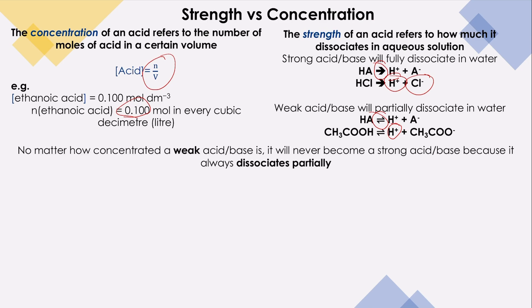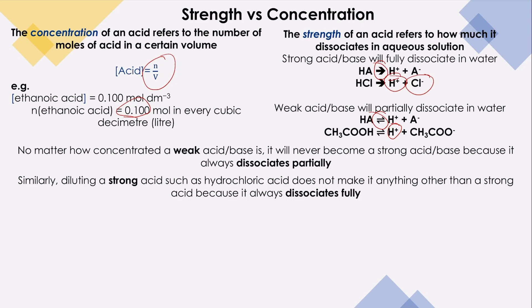So no matter how concentrated a weak acid is, it is still weak acid. It will never become a strong acid because it will always dissociate partially. Same with strong acid. Hydrochloric acid does not make it anything other than strong acid. Even if we dilute it, diluting a strong acid will never make it weak because it is fully dissociated.